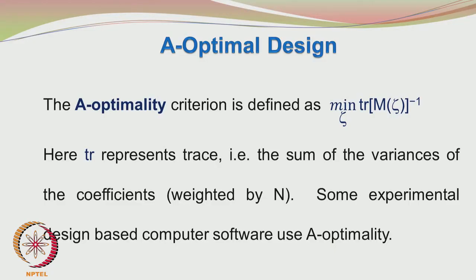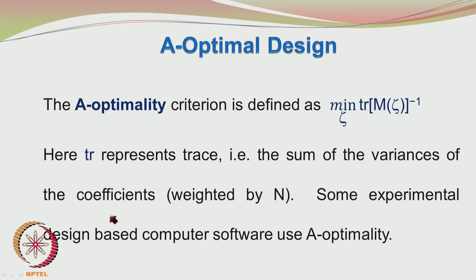How do we define the A-optimality criterion? It is defined as identifying the minimum corresponding to the trace of M of zeta inverse. We are looking at the trace elements of the M of zeta inverse matrix and we want to minimize the values of the diagonal terms. Here, trace represents the sum of variances of the coefficients weighted by n. Some experimental design based computer software use A-optimality.